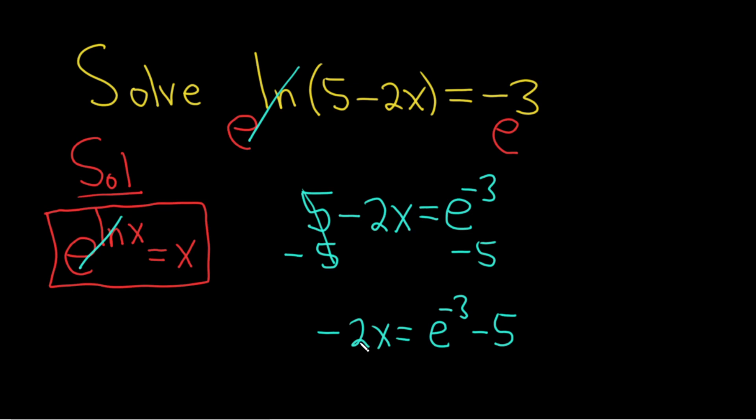x is being multiplied by negative 2, so now we'll just divide by negative 2. These go away.